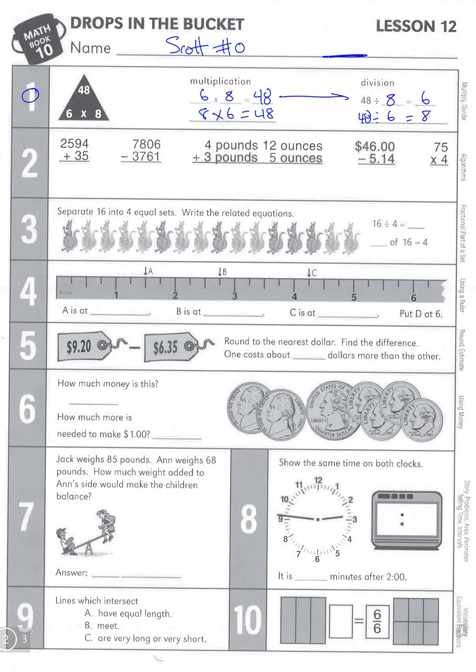Number 2. Addition right here: 4 plus 5 is 9, 9 plus 3 is 12, 5 plus 1 is 6, and 2, 2, 2—2,629.